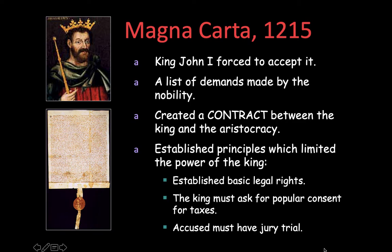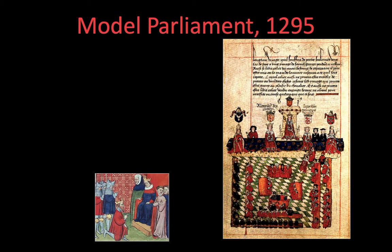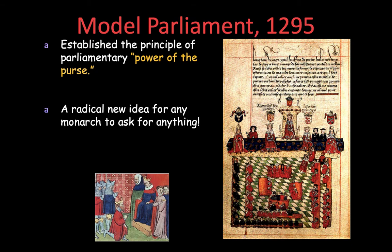The king also has to ask for consent for taxation. So the king asks — and in the case of England, it's not quite a Parliament yet, but Parliament will come. There was a group of advisors to the king that modeled Parliament in the late 1200s. When the king has to ask for consent of taxation, this is called, in parliamentary terms, the power of the purse.